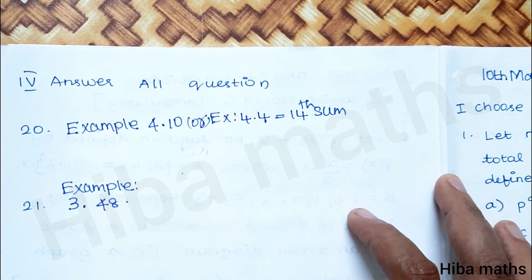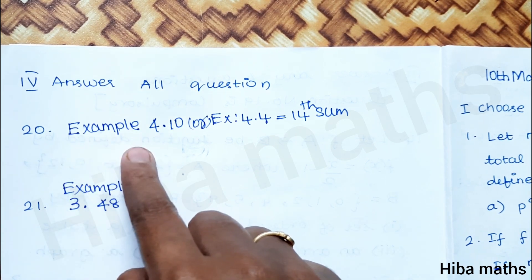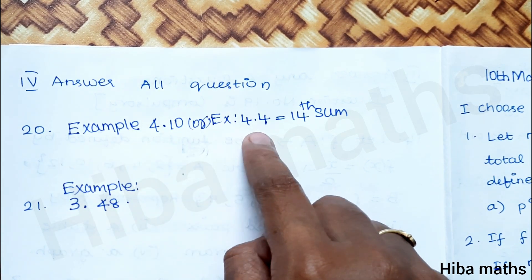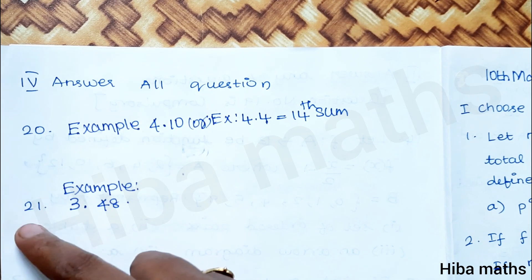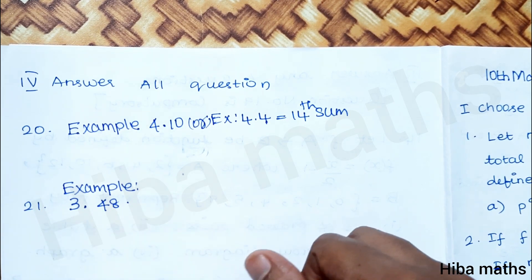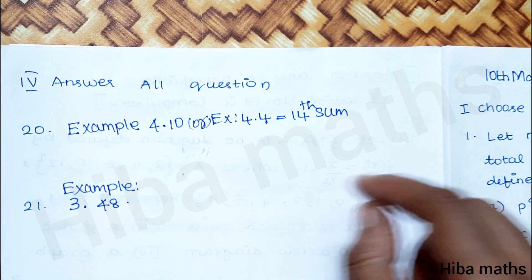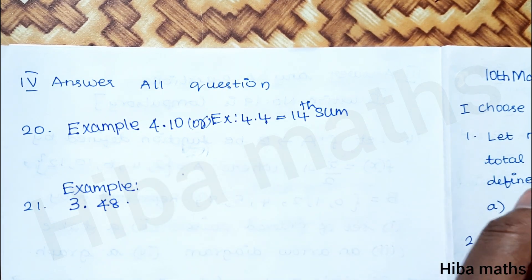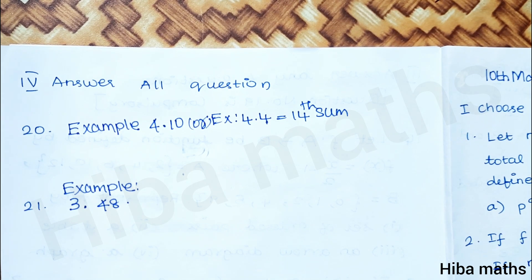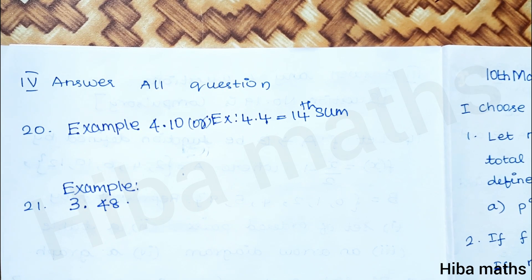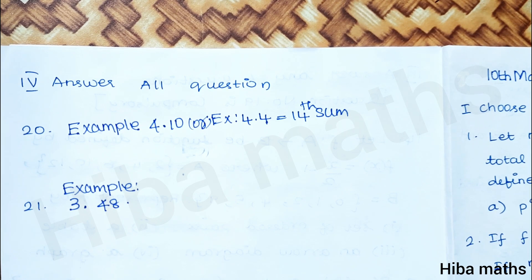For the 20th question, refer to example 4.10 or exercise 4.4 to 4.14. The 21st question refers to example 3.48. Check the question paper choices carefully — you can see the options. Repeat the same for 2-mark questions. When you complete the exam, check and submit your answer sheet.